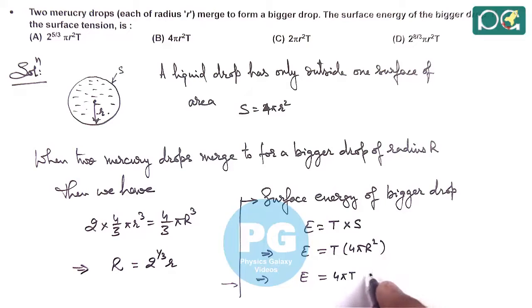So this will be 2^(1/3)r whole square. Here this becomes 2^(2/3), multiplied by 4, this is 2^(2/3 + 1) = 2^(5/3). So it becomes 2^(8/3)πr²T.